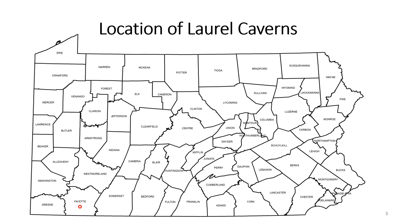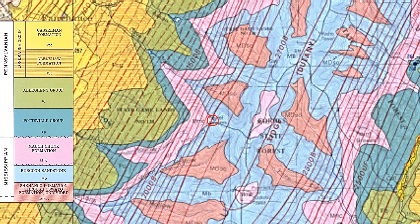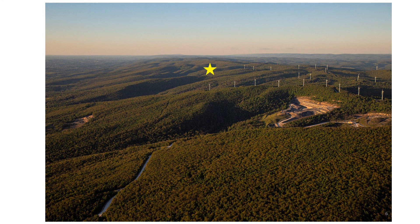Laurel Caverns is in southwestern Pennsylvania, down here in Fayette County. Laurel Caverns formed in the Chestnut Ridge Anticline of Fayette County. This is a geologic map done by Jim Chalice and Tom McElroy in 1988. On this map you can see the structure contours on top of the Bragoon sandstone. The Bragoon sandstone directly underlies the carbonates of the Mauch Chunk formation, and Laurel Caverns formed in those carbonates. Here we are zooming in on Laurel Caverns in this regional map. Note the change in dip of the Bragoon sandstone right at the entrance of Laurel Caverns. Here is an aerial photograph of Chestnut Ridge. The yellow star marks the location of Laurel Caverns, and in the foreground you can see a quarry in the Wimps Gap limestone.